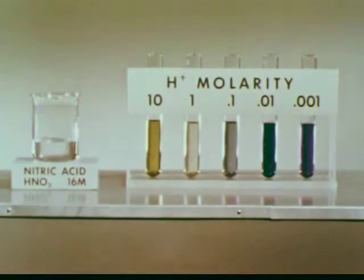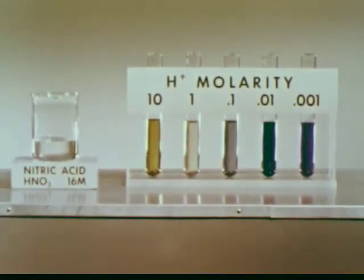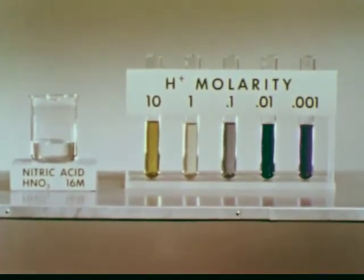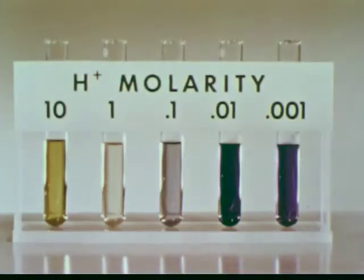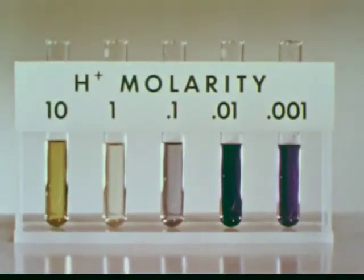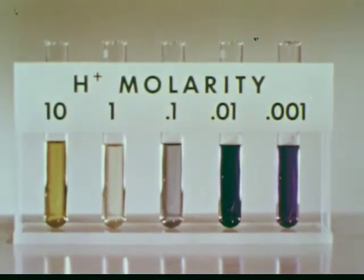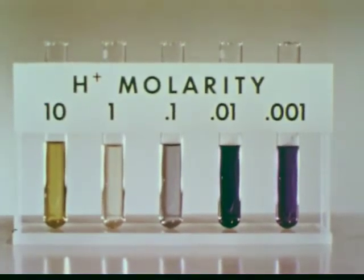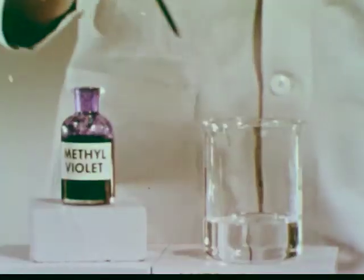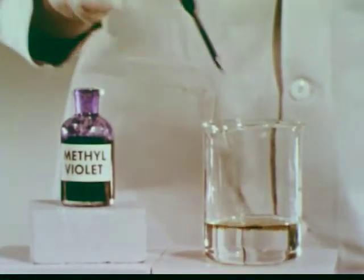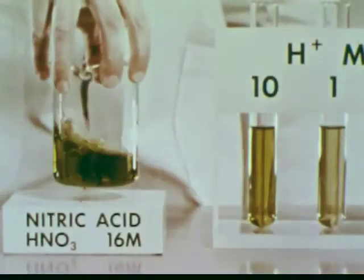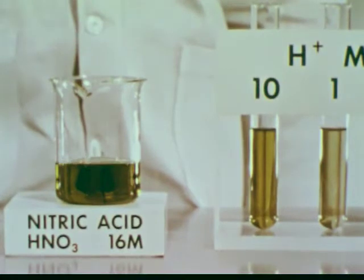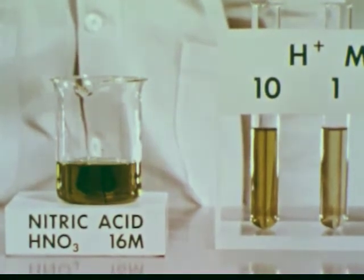Let's investigate this acidity using an acid-base indicator. Here we have a set of tubes containing solutions of varying acidity, each containing methyl violet as an indicator. Note that the color varies from green to violet as the hydrogen ion concentration changes from 10 molar to 1/1000th molar. When methyl violet is placed in 16 molar nitric acid, the color indicates a very high hydrogen ion concentration, at least 10 molar. Thus nitric acid is a very strong acid.